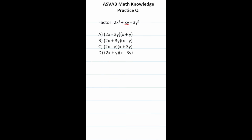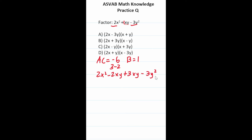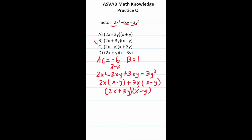This ASVAB PiCat math knowledge question asks us to factor 2x squared plus xy minus 3y squared using the AC method. A times C is 2 times negative 3, which is negative 6. B is 1. We look for two numbers that multiply to negative 6 and add to 1: that's 3 and negative 2. Rewriting: 2x squared minus 2xy plus 3xy minus 3y squared. Factoring by grouping: 2x(x minus y) plus 3y(x minus y) gives (2x plus 3y)(x minus y), which is answer choice B.